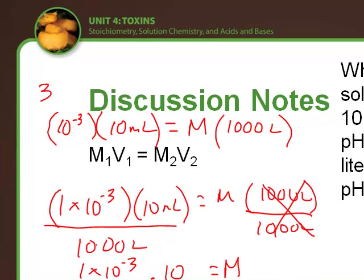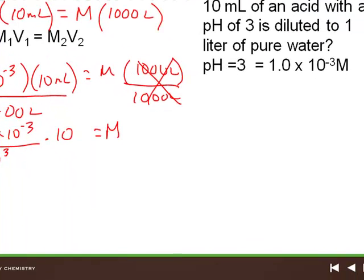Molarity equals 1 times 10 to the negative 3rd over 1,000. And 10 to the 3rd times 10. So using this equation and a calculator. So 1E3 negative divided by 1E3 times 10.